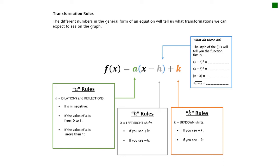The most important thing is to talk about what families these represent. If the blue parentheses have a square on the outside, that's a quadratic family function. If you have a cube on the outside, it's a cubic family function. If you have absolute value bars, it's an absolute value family. And if there's a radical over x minus h, that's a square root function.